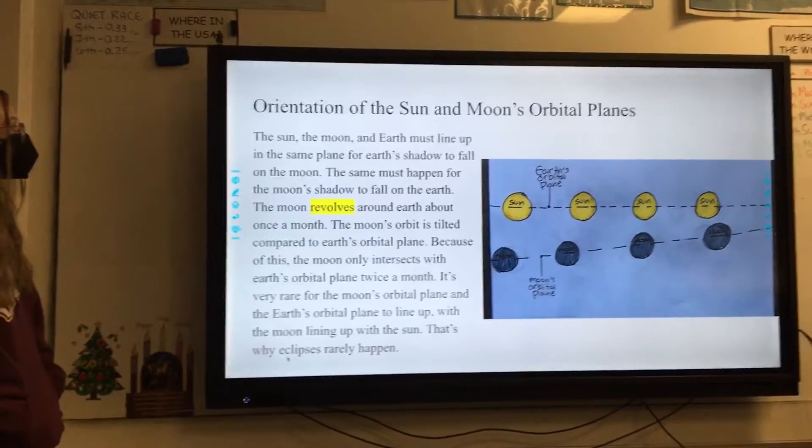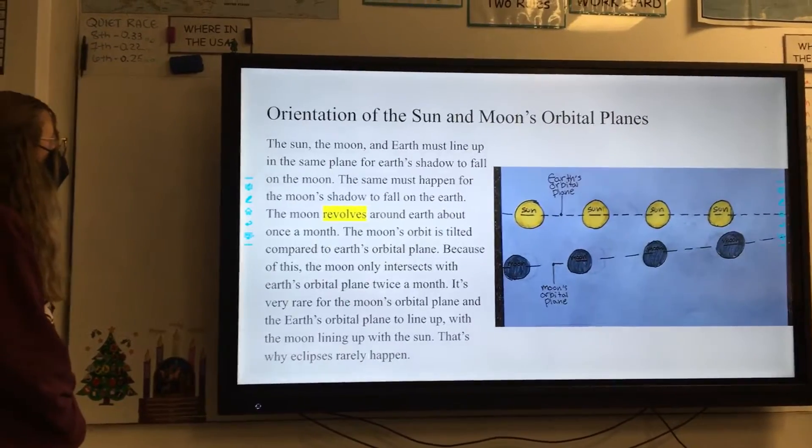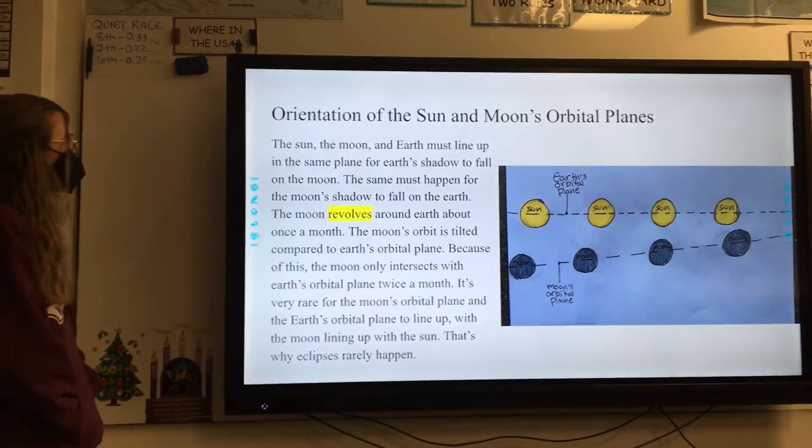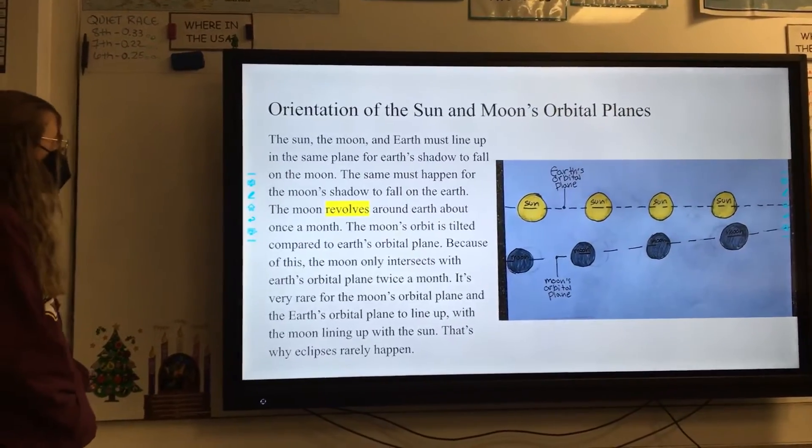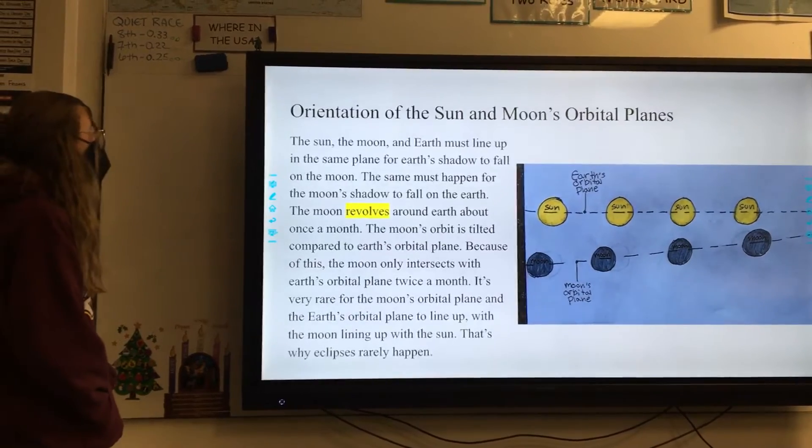Orientation of the Sun and Moon's orbital planes. The Sun, Moon, and Earth must line up in the same plane for Earth's shadow to fall on the Moon. The same must happen for the Moon's shadow to fall on the Earth. The Moon orbits around Earth about once a month.